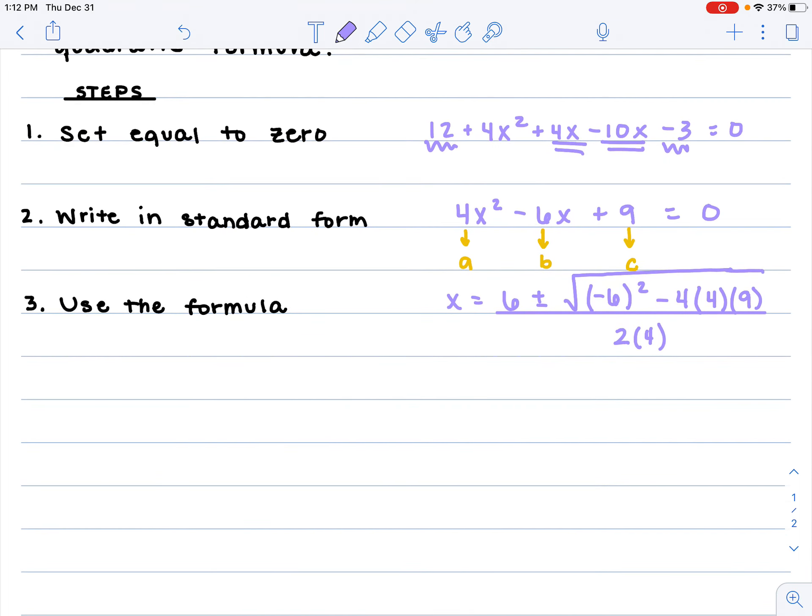We clearly can't leave our answer like this. We have to do some simplifying here. I've got x = 6 ± √(36 - 144)/8. 6 times 6 is 36. 4 times 4 times 9 is 144. 2 times 4 is 8. 36 minus 144 is -108.